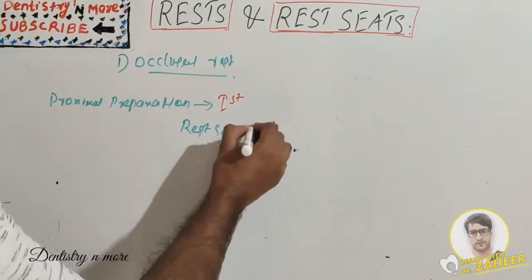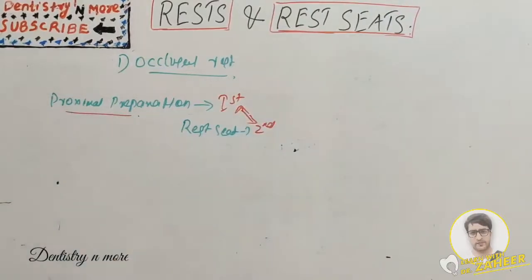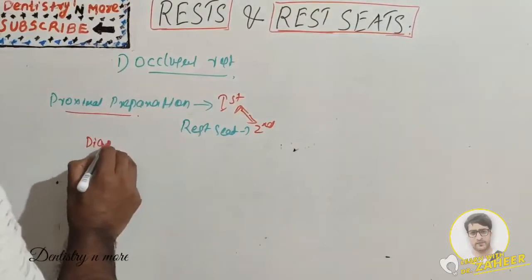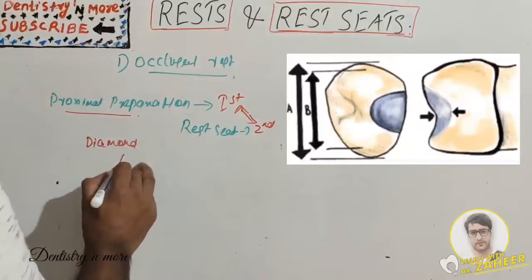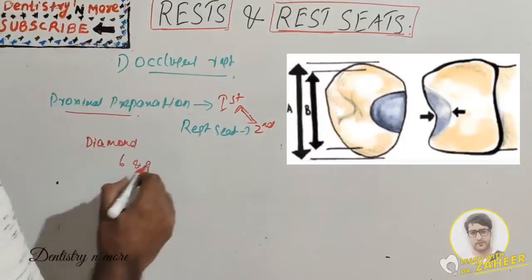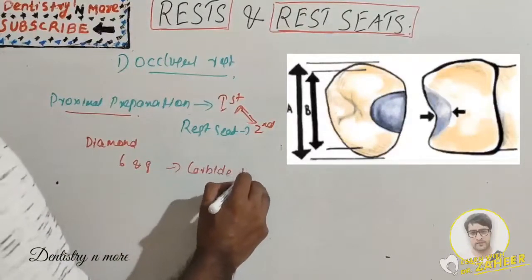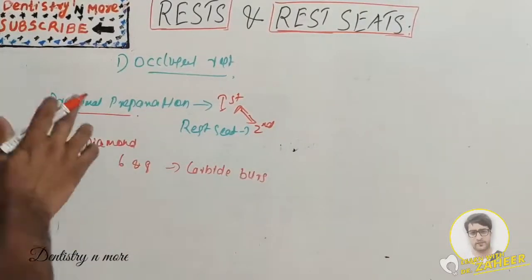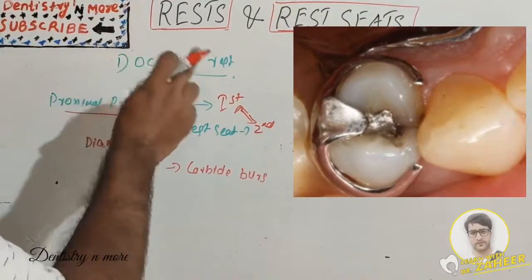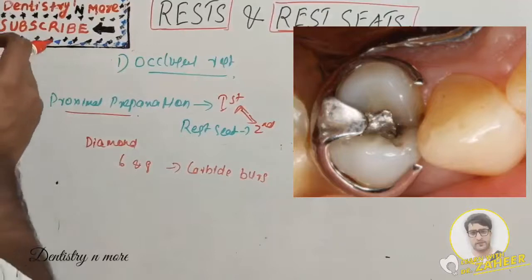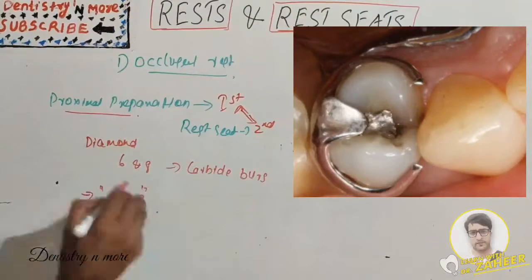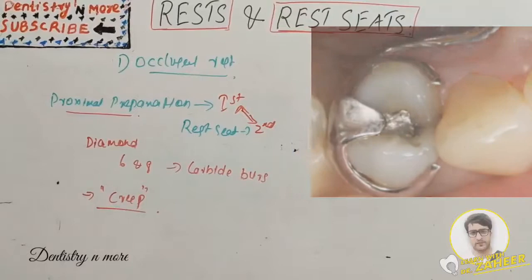For rest seat preparation in an existing restoration, the procedure is the same as in enamel — proximal preparation first, then the rest seat. Rest seat preparation in amalgam should be avoided because of the creep problem. For new restorations, the rest seat should be placed in the wax pattern.